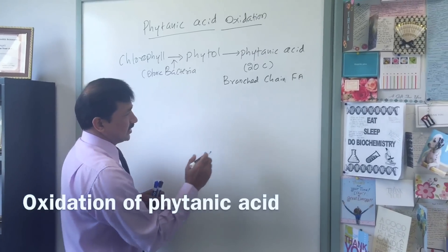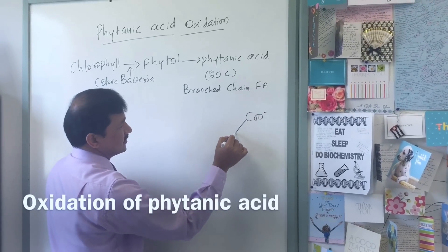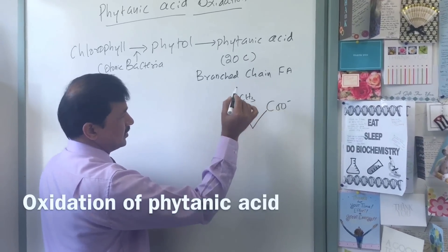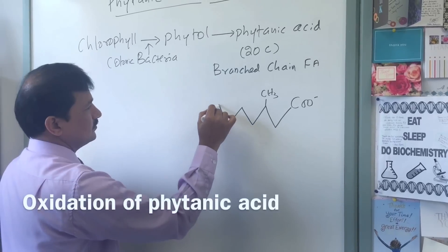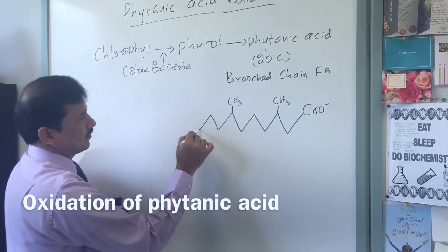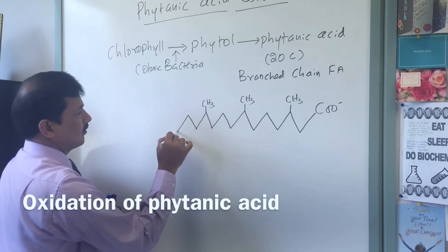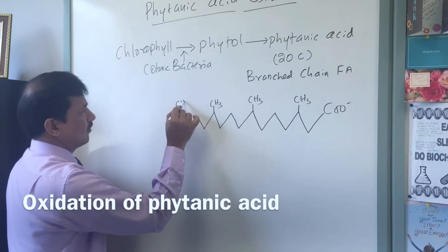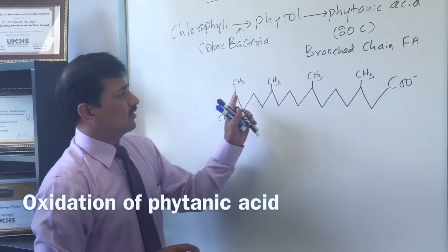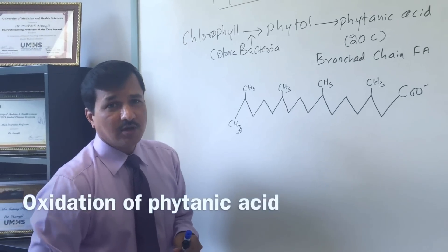Here is the phytanic acid — it has a carboxyl group (COO minus) and then there are methyl groups at the branch points. As you can see there are branches here; each branch has a methyl group. The problem is you cannot conduct normal regular beta oxidation on this phytanic acid.